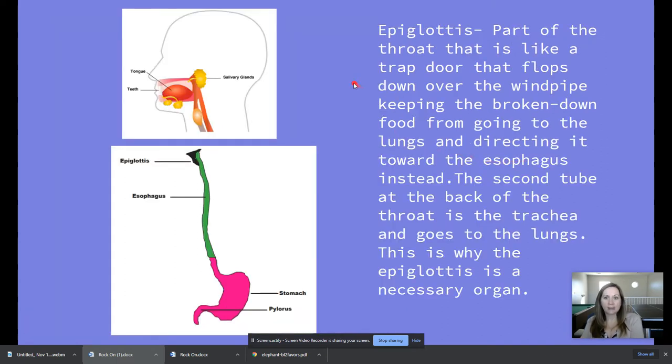So the epiglottis, it's a fun word to say, it's that little part of your throat that is like a trap door that flops down over the windpipe. Keeping the broken down food from going to the lungs and directing it toward the esophagus instead. Now it's not that little hanging down thing that you see down there. You can't see it, but it's just like a little flap that opens and closes because when you drink water, you want it to go down the right place, right? Have you ever gotten choked and then you said, oh, it went down the wrong pipe? People say that. You've heard that? Because it went down into your windpipe instead of into your esophagus.